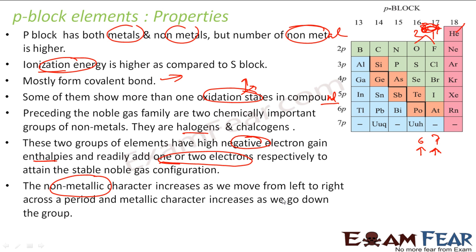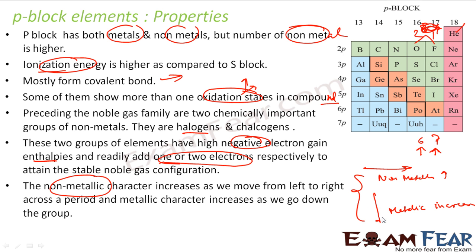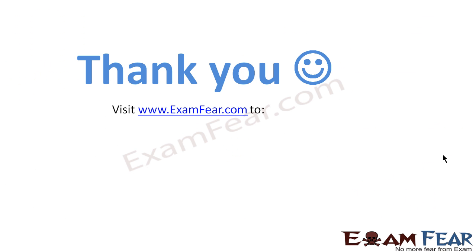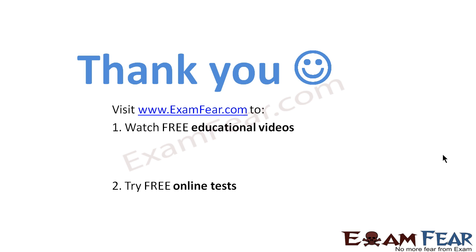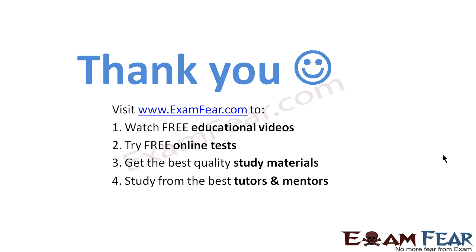The non-metallic character increases as we move from left to right across the period, and the metallic character increases as we go down the group. We have learned these things in class 10, and we will discuss again logically why this happens. Visit examfear.com to watch free educational videos, try free online tests, get the best quality study materials, and study from the best tutors and mentors. Thanks again.